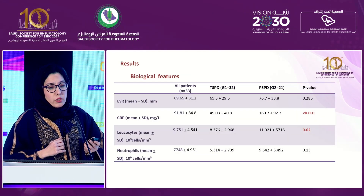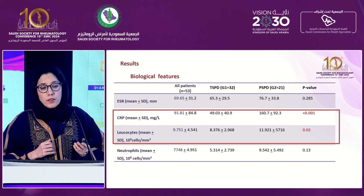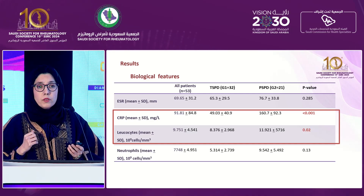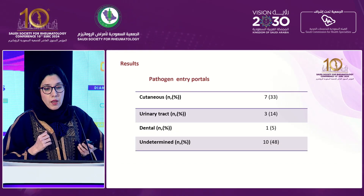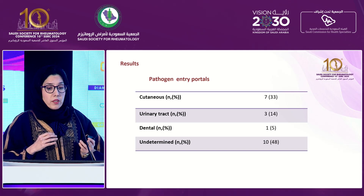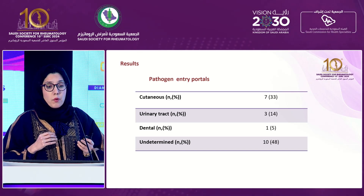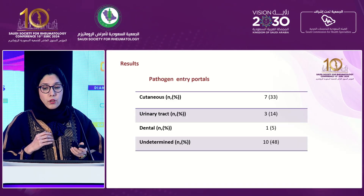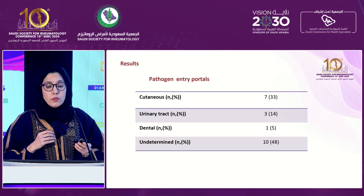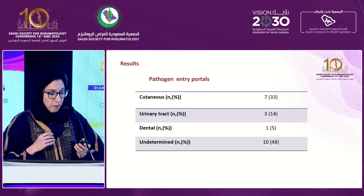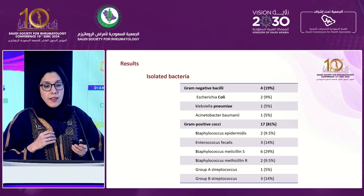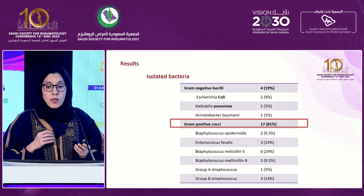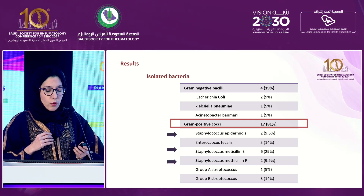For biological features, CRP and leukocytes were significantly higher in pyogenic spondylodiscitis patients. Among patients with pyogenic spondylodiscitis, the pathogen entry portals were cutaneous in 33% of cases and indeterminate in 48% of cases. The isolated bacteria were gram-positive cocci in 81% of cases, especially Staphylococcus.